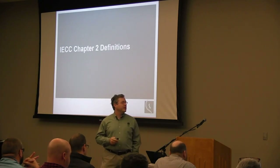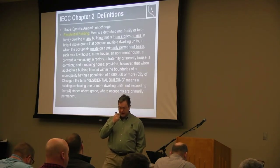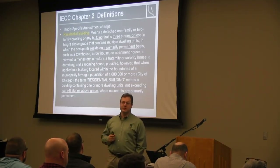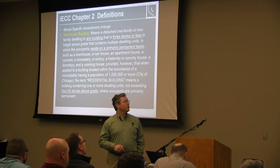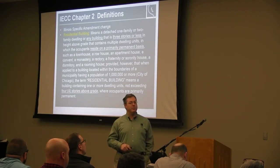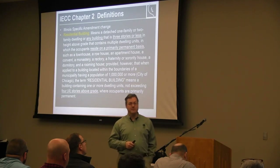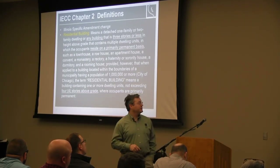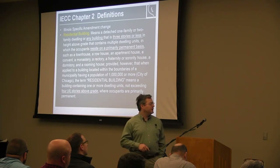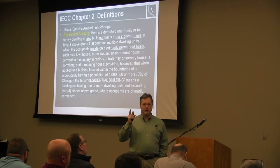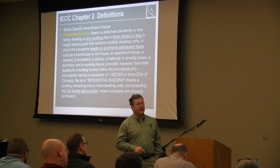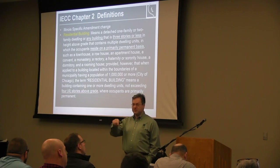For the purposes of the Illinois Energy Code, a residential building is defined as a one- or two-family dwelling, or any building three stories or less with multiple dwelling units occupied primarily on a permanent basis. A motel does not count because occupants are not there on a primary basis. The code enumerates several types, and notably, municipalities with a population of one million or more — meaning the city of Chicago — get an extra story, so four stories or less.